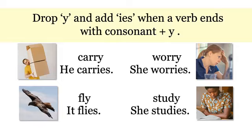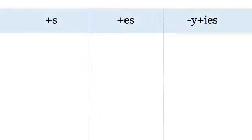Let's practice. Look at the verb cry. When we add an S, which spelling rule do we use? Cries. We drop the Y and add IES.